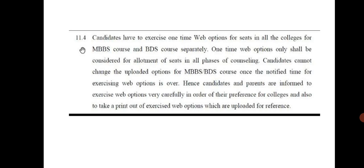Be careful — whatever seat you get allotted in the first phase, report to that college and submit your documents. In the second phase, if you get your preferred college, report to that college and submit your acknowledgement. If you do not do so, you will lose both the seat from the first round and the second round. Be very careful before going for the web option.